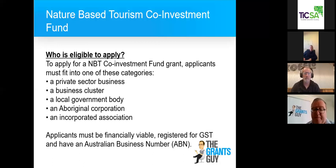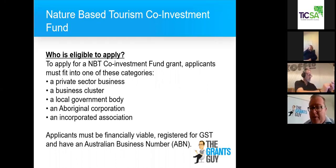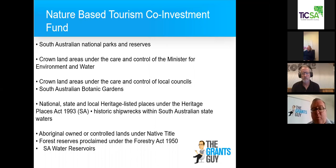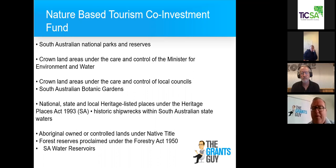Who's eligible to apply? Private sector business, business cluster, local government body, Aboriginal corporation or incorporated association. You must be financially viable, registered for GST, and have an ABN. Make sure you can legitimize yourself with the application and that you meet those mandatory requirements. The scope of where activity can take place is quite wide and varied. Be particular to your own service capability, your experience delivering into these areas geographically, and what you've done in the past to provide value for the tourism economy.